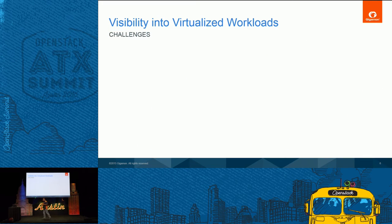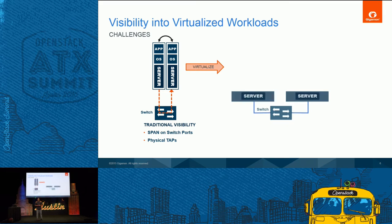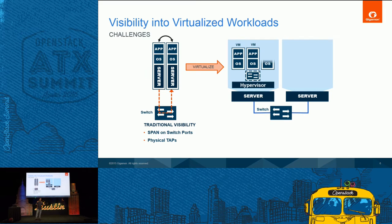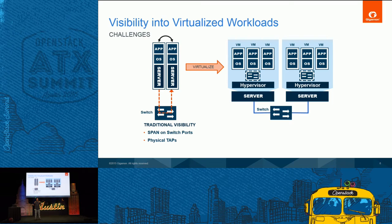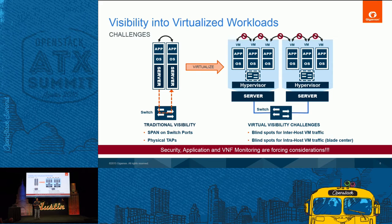What are the challenges and why are we at OpenStack Summit talking about this? With a typical physical server you could span or tap the traffic and inspect it. But if you virtualize that server with high consolidation ratios — anywhere from 10 to 100 per host — east-west traffic becomes a blind spot. Nobody is inspecting that. This is where Gigamon fits in: solving that challenge for security, application, and VNF monitoring.